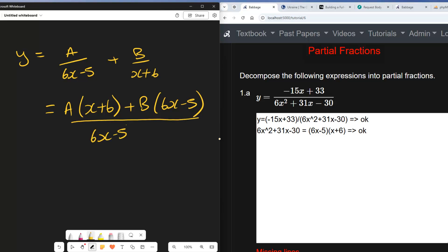If we expand the denominator, we get 6x² + 31x - 30, which means that we can now write -15x + 33 is equal to A times (x + 6) plus B times (6x - 5). And that's what we call the sanity check equation.